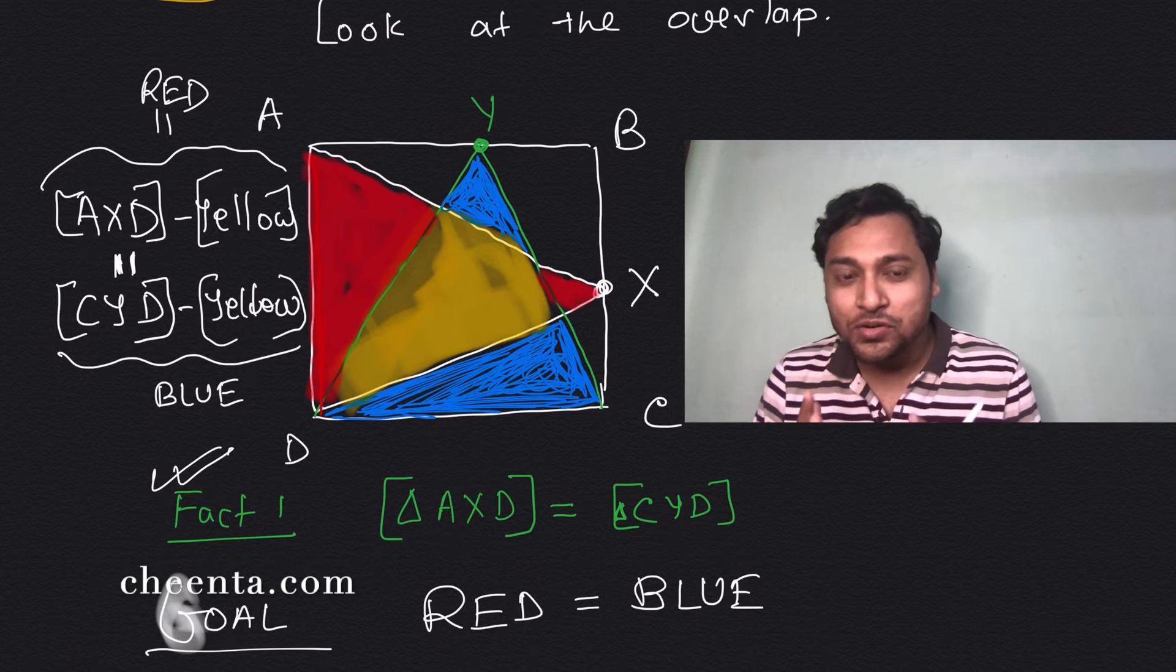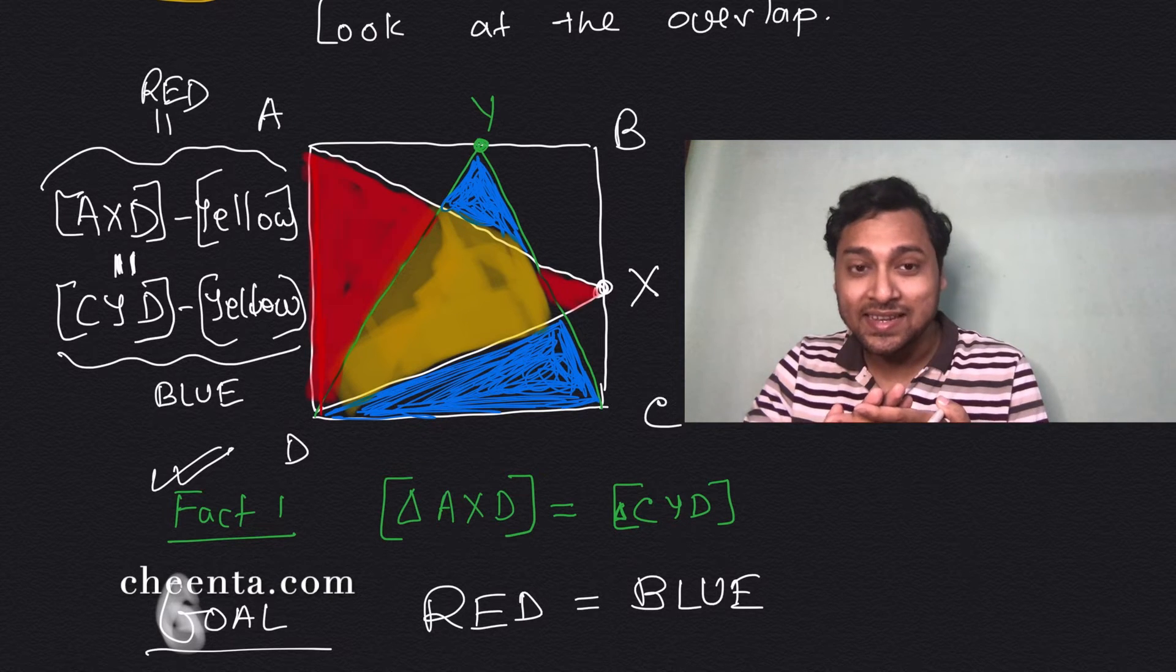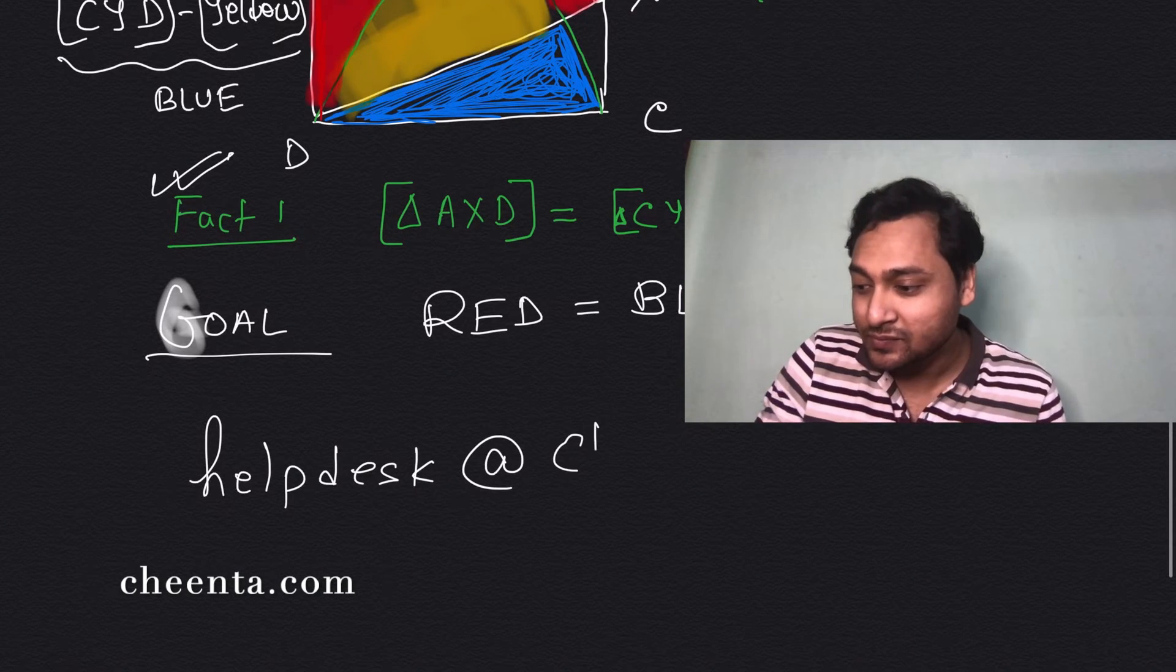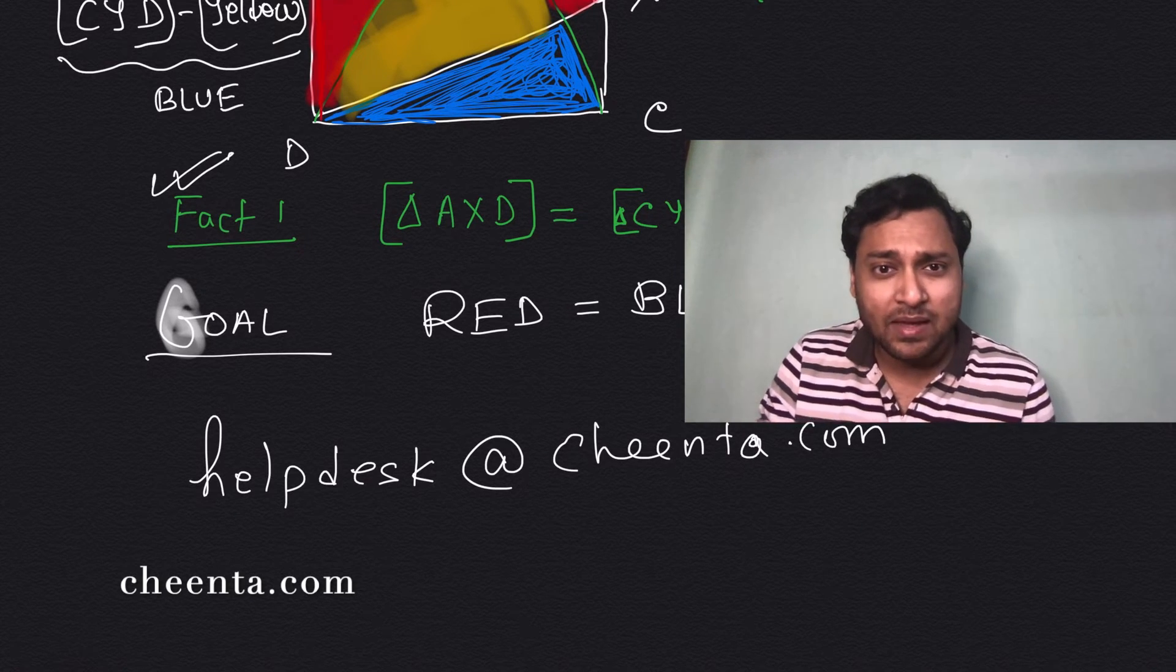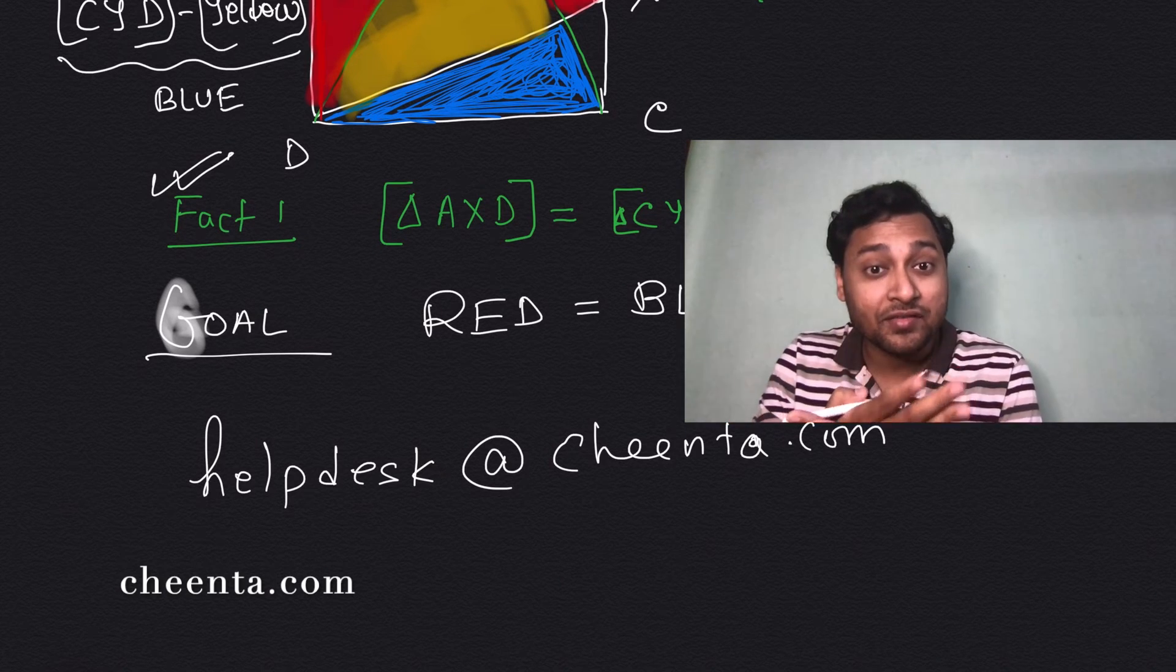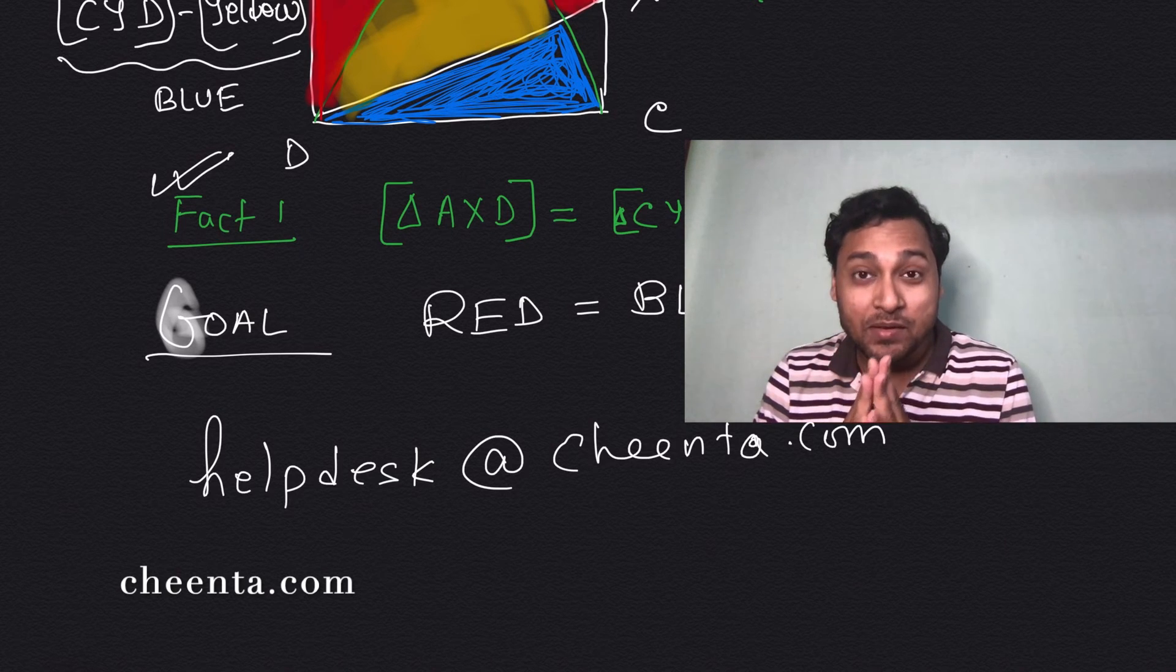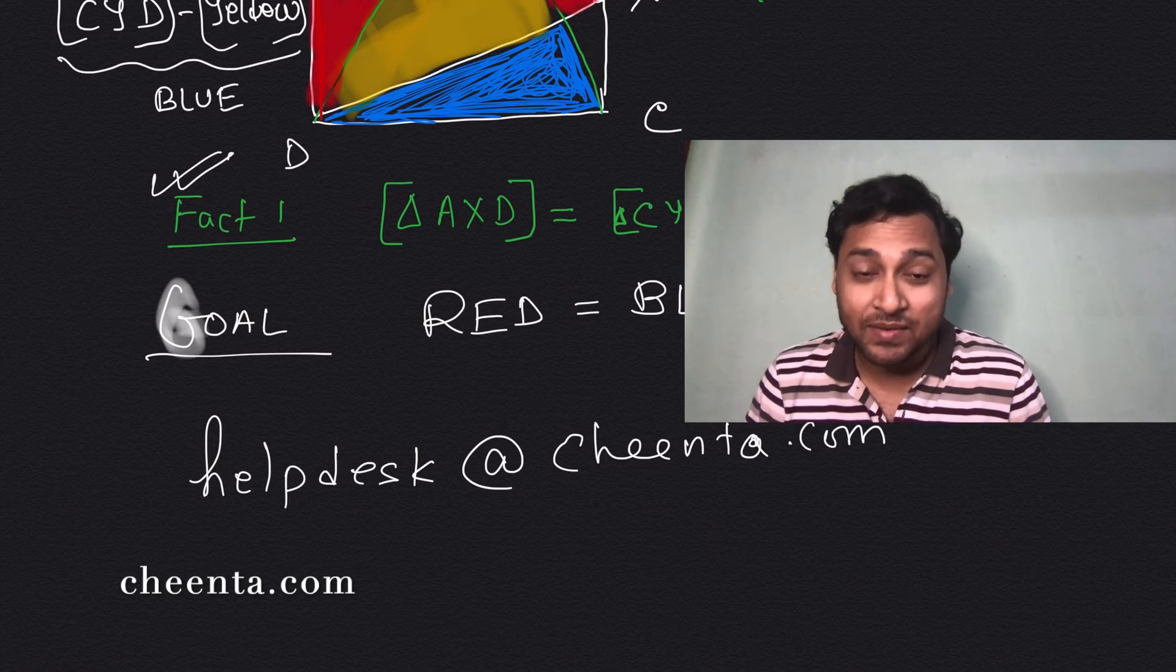So why don't you create pictures of overlapping equal area figures and send it by email to helpdesk at cheenta.com. Email me what pictures you can create. Maybe you have some fancy picture, you have a square, maybe you can create two overlapping triangles, I don't know. And the remaining portions are looking really weird, so manually it will be very hard to prove those two areas are equal, but using this carpet strategy it will be very simple.